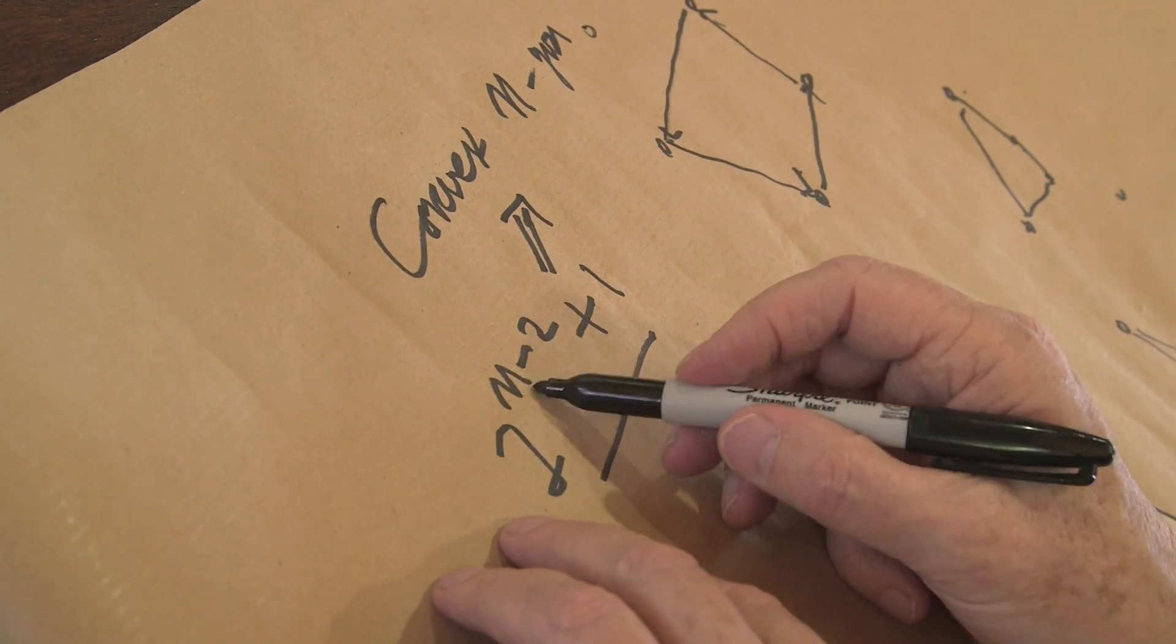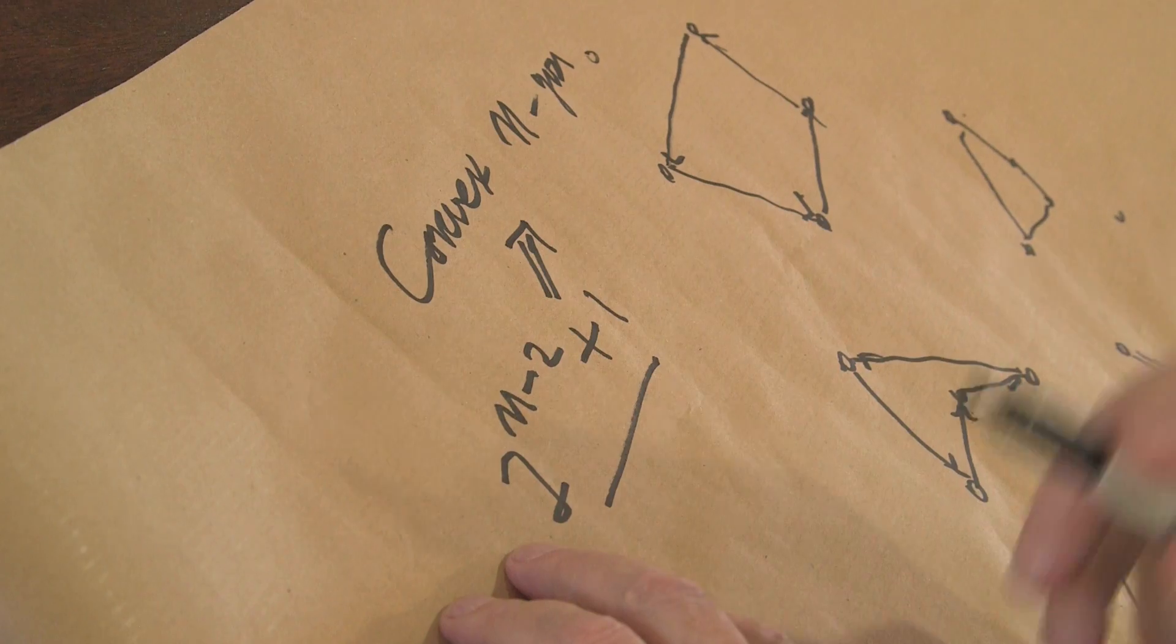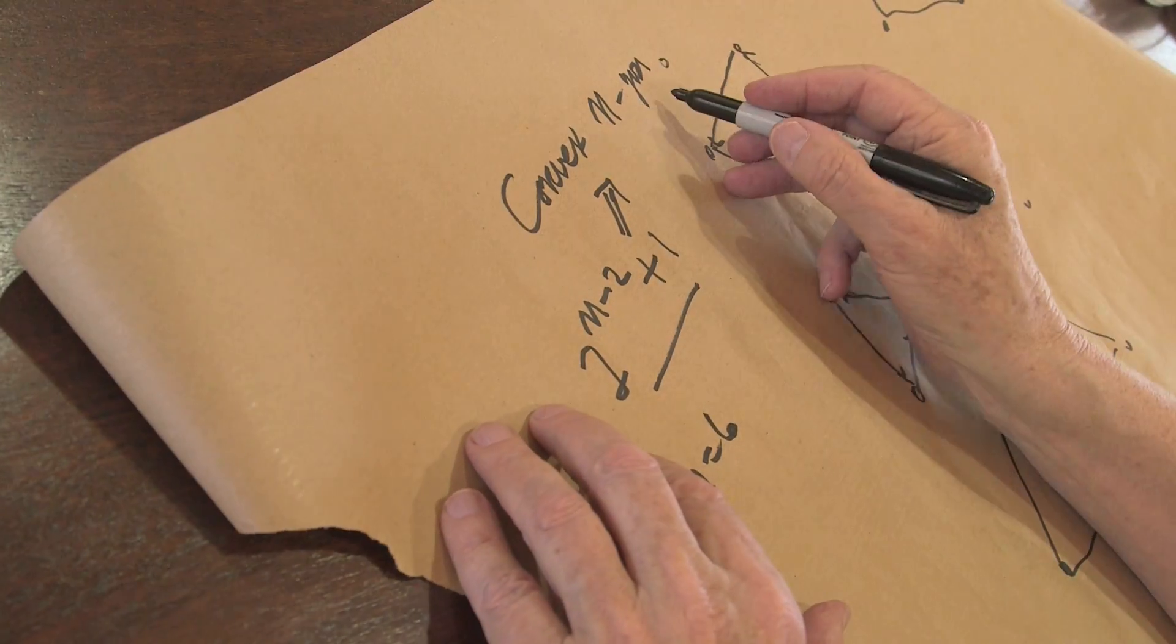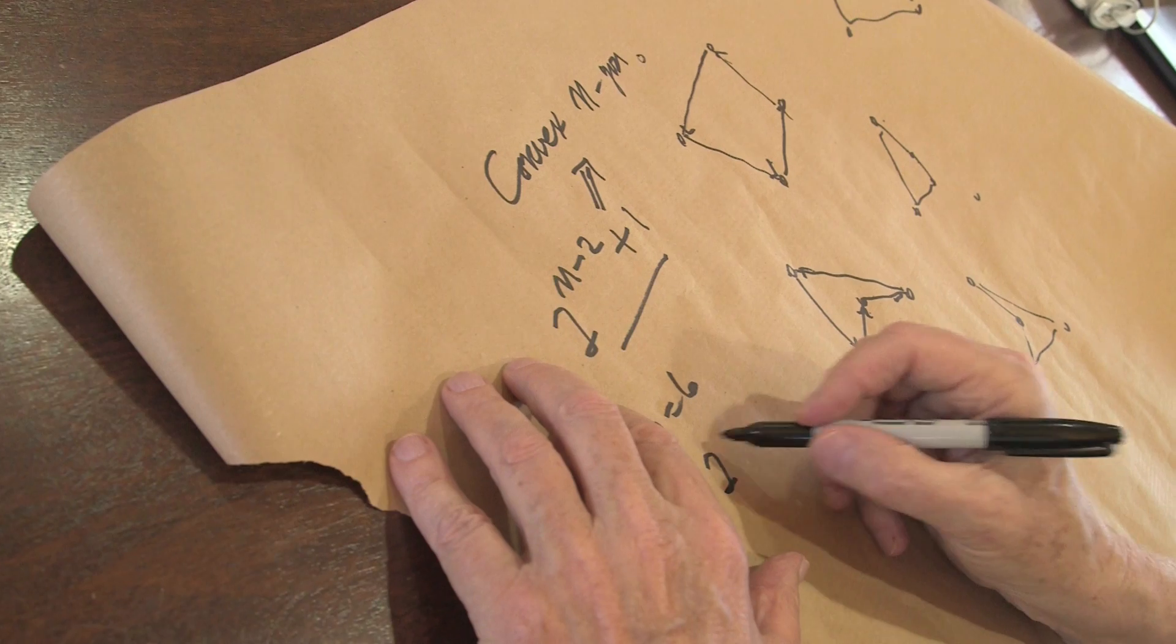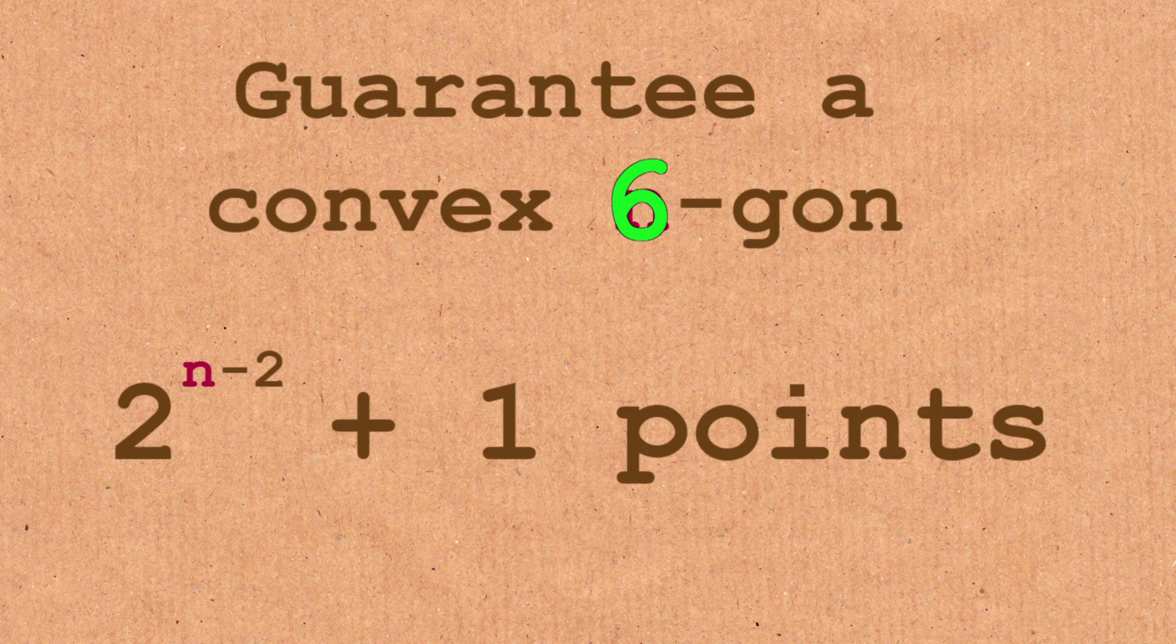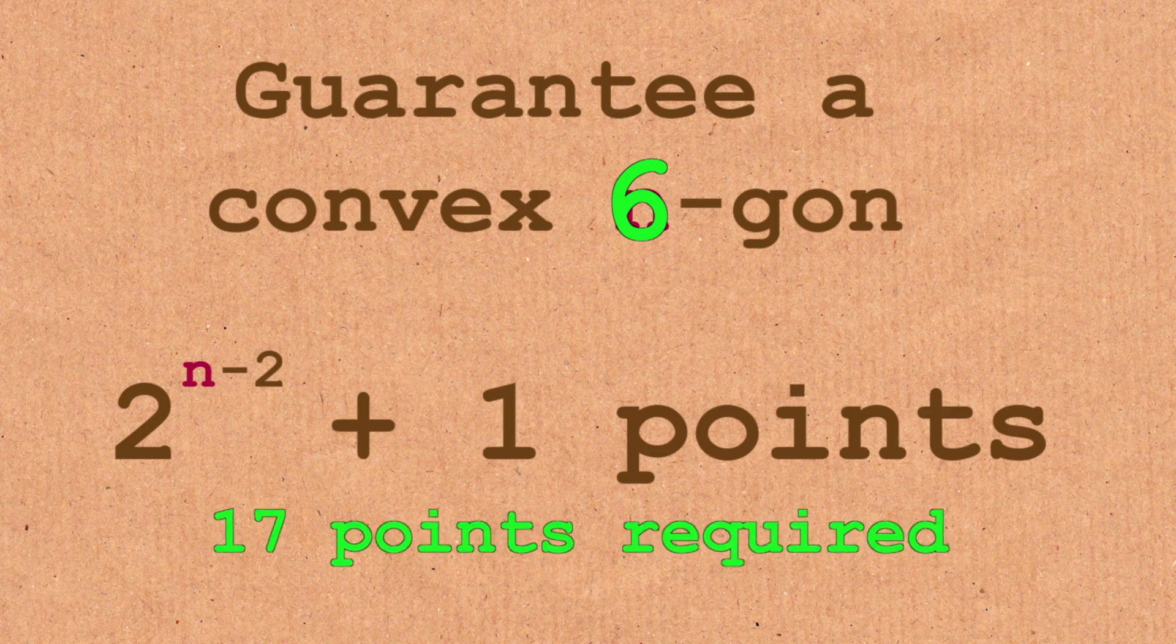There is a way to put only 2^(n-2) and not get one. So if n is equal to, say, six, you want a convex six-gon, then 2^(6-2) + 1, which is 17. And that was that recent result.